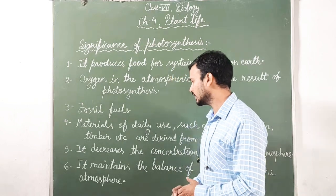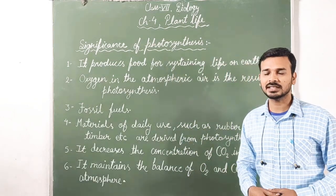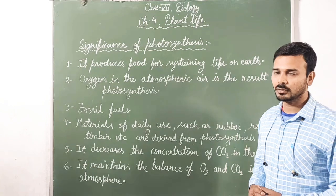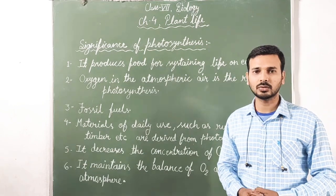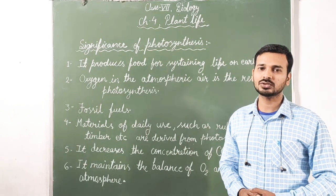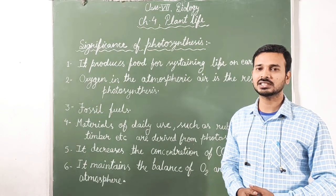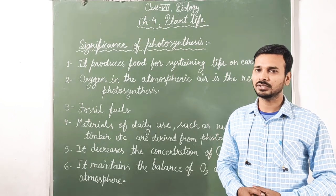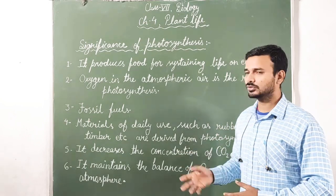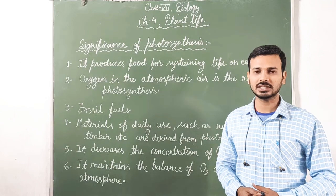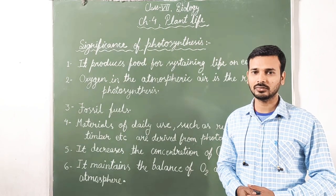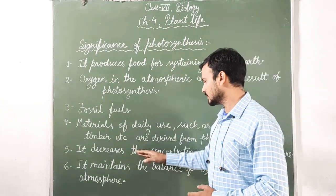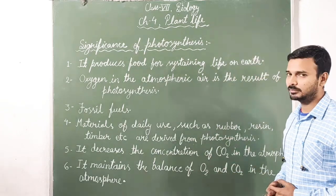Fourth, materials of daily use such as rubber, resin, and timber are derived from the process of photosynthesis. We use these materials for different kinds of work, such as making utensils and furniture.